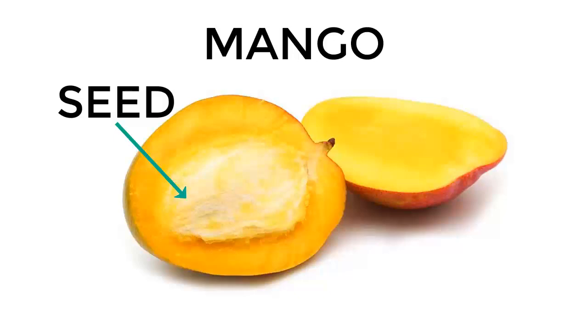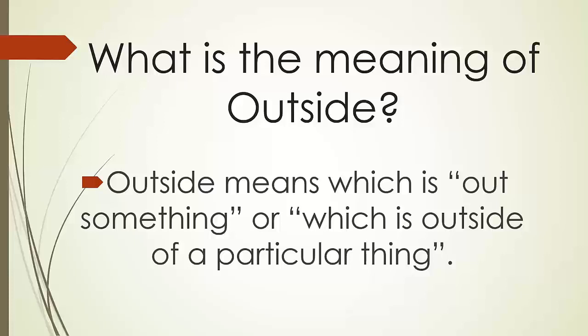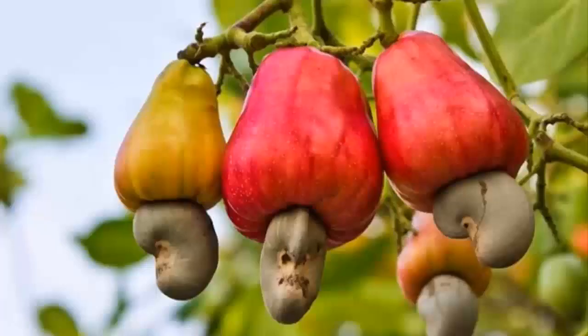So, something which is covered with a particular object is called inside. Now let's talk about outside. Outside means which is outside of a particular thing. Let's take its example — cashew nuts. Cashew nuts grow outside the fruit. It is a dry fruit. The seed of the cashew nut is seen outside the fruit; the cashew nut is not inside the fruit, which is very clear in the picture. So we can easily differentiate between inside and outside.